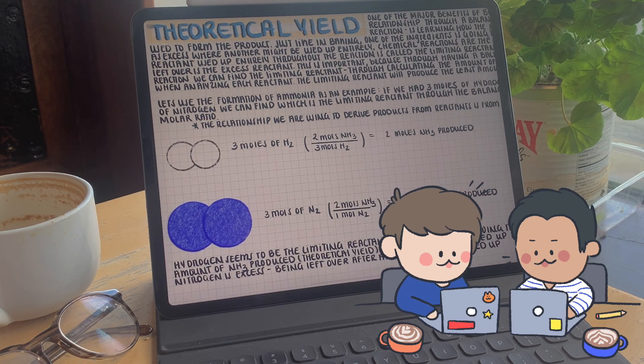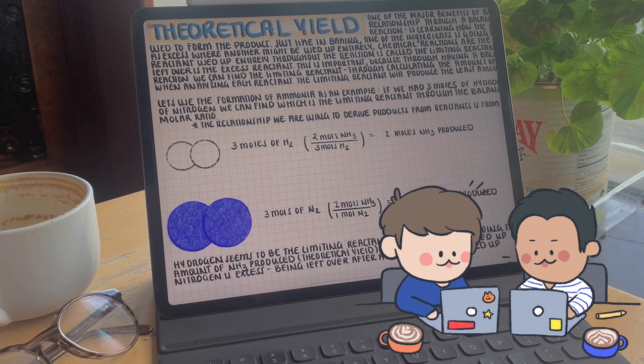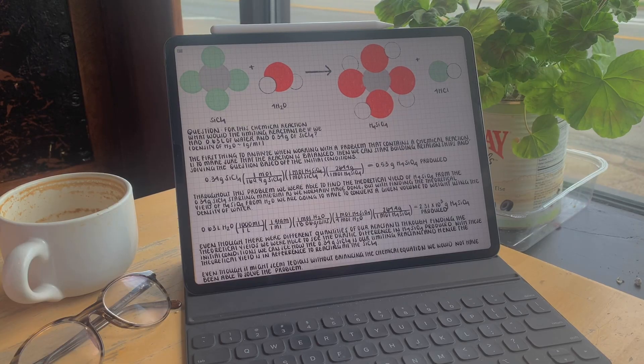So throughout this video, I want to dive into three unique examples of balancing a chemical equation, building a molar relationship, and finding the limiting reactants.